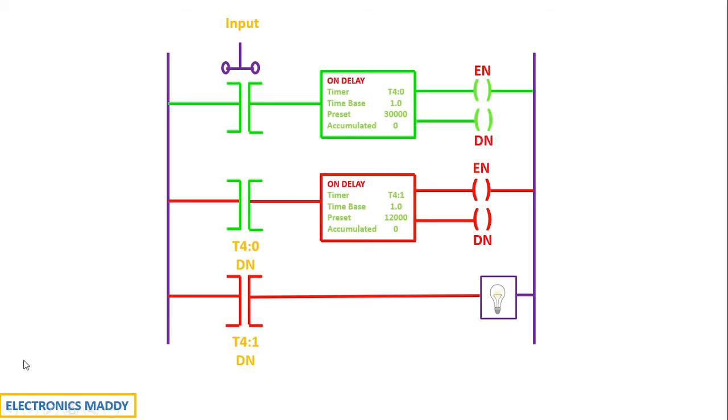Once the done bit goes high, instantly, the same address is used over here. As a result, this contact also goes high. The rung gets energized. The on delay timer, the second one in this case, will get energized.